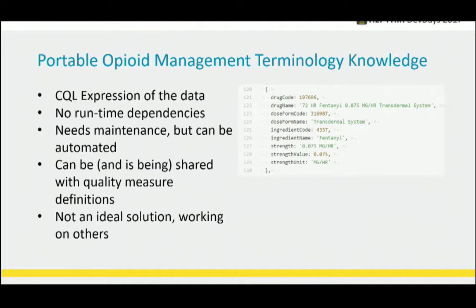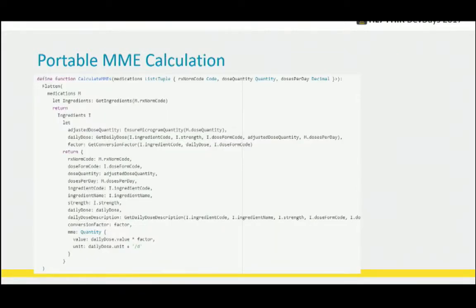That is isolated to a single library of CQL and provides a way to distribute that. It's not ideal, but it's functional. As you can see, it's pretty close to just JSON. There are about a thousand or so entries in that library. This is the actual portable MME calculation: for each medication, we pull the ingredients back and then do the conversion factor on that ingredient based on the daily dose and dose form. That gives you the MME.